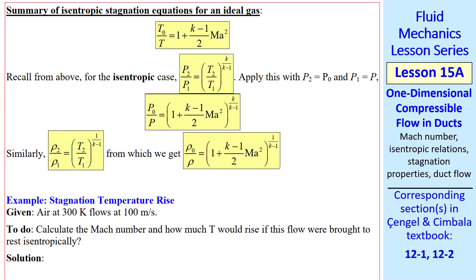Here's a summary of isentropic stagnation equations for an ideal gas. If we apply our isentropic relations for the pressure ratio, and let P2 equal P0 and P1 equal P, we get an expression for stagnation pressure over P. We can do a similar thing with density, with the same result except with a different exponent. This pressure equation in particular is quite useful for duct flows. If Mach number is known, and T0 and P0 are known, we can calculate pressure, temperature, and density at that location in the flow.